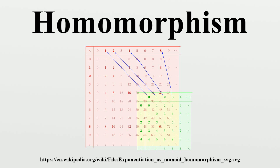This type of homomorphism can be thought of as a monoid homomorphism, where Σ* — the set of all words over a finite alphabet Σ — is a monoid with operation concatenation and the empty word as the identity.